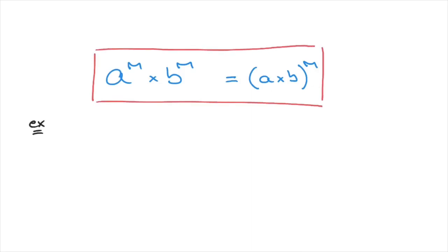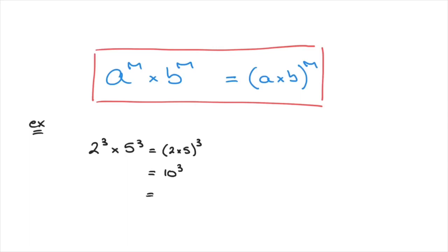Here's a quick example: say we have to simplify 2 to the power of 3 times 5 to the power of 3. We're dealing with different bases, 2 and 5, but each is raised to the same power, 3. Using this rule, this equals, in parentheses, 2 times 5 all raised to the power of 3, which is 10 raised to the power of 3. If we calculate it, that's equal to 1,000. We'll see more about this special case when we learn about powers of powers in just a couple more tutorials, but do make a note of this now, as it's often very useful for simplifying expressions.